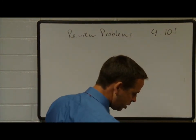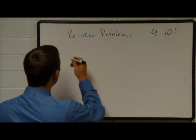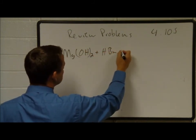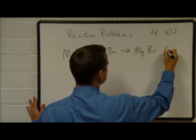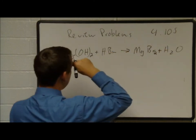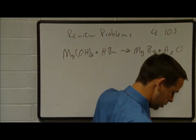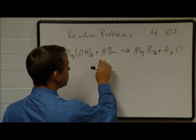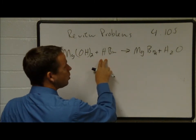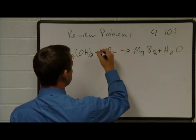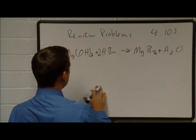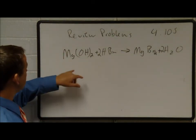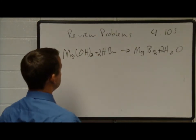Problem 4.105: balance the following equations. First, magnesium hydroxide plus HBr gives magnesium bromide and water. We have 2 bromides so put a 2 in front of HBr. That gives 4 hydrogens on the left: 2 from Mg(OH)2 and 2 from 2 HBr, giving 4 hydrogens total — and 2 oxygens on each side. That balances it.